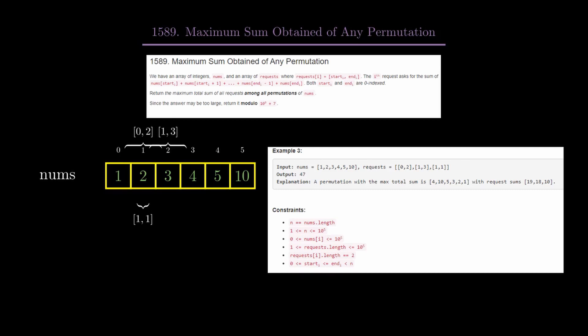For this, the answer for the first request will be 1 + 2 + 3 = 6. For the second request, 2 + 3 + 4 = 9. And for the third request, 2. Taking the sum: 17.